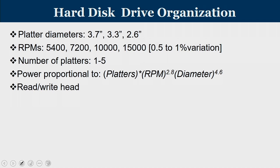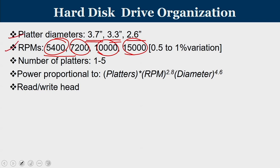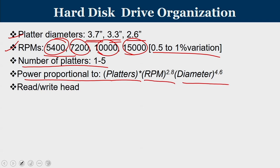The diameter of the platters — the circular surfaces — is typically 3.7 inches, 3.3 inches, or 2.6 inches. Plates are rotated by a spindle, with revolutions per minute (RPM) ranging roughly from 5400 to 7200, 10000, and 15000. There can be about 1% variation; it may not be possible to design circuitry with exactly 15000 RPM. The number of platters varies from 1 to 5, and power is proportional to platters × RPM^2.8 × diameter^4.6.